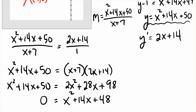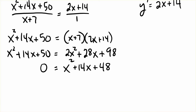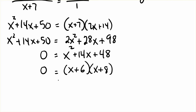That expression is going to factor. Looking for two numbers that multiply to give 48 and add to give 14 — that's x plus 6 and x plus 8 — equals 0. So our values of x are x equals negative 6 and x equals negative 8.